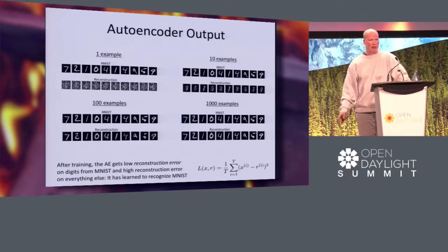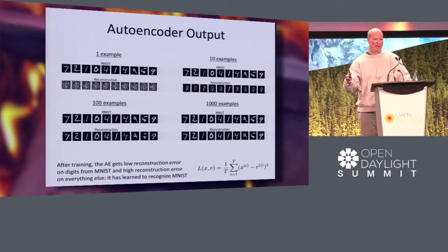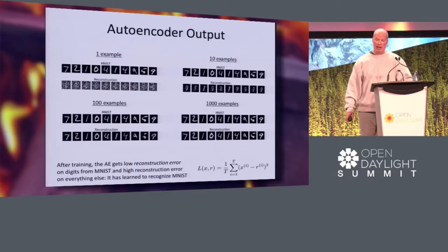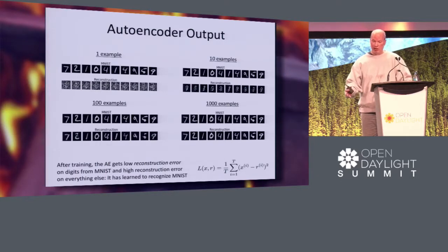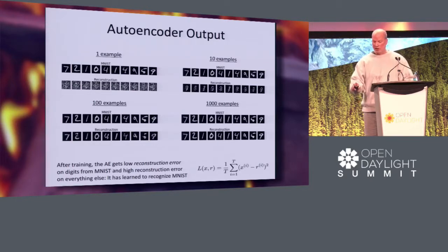So what happens? If you give it just one example, the reconstruction is just random — because you initialize the weights to random. Give it 10 and it gets a little better. 100, a little better still. By the time you give it 1,000 it's doing pretty well and gets low reconstruction error. On things from MNIST it gets low reconstruction error, and on things outside MNIST it gets high reconstruction error. You can see how you can use this for anomaly detection — just put a threshold on the reconstruction error above which you call it an anomaly. And we can do this in networking too, which we do, by the way.